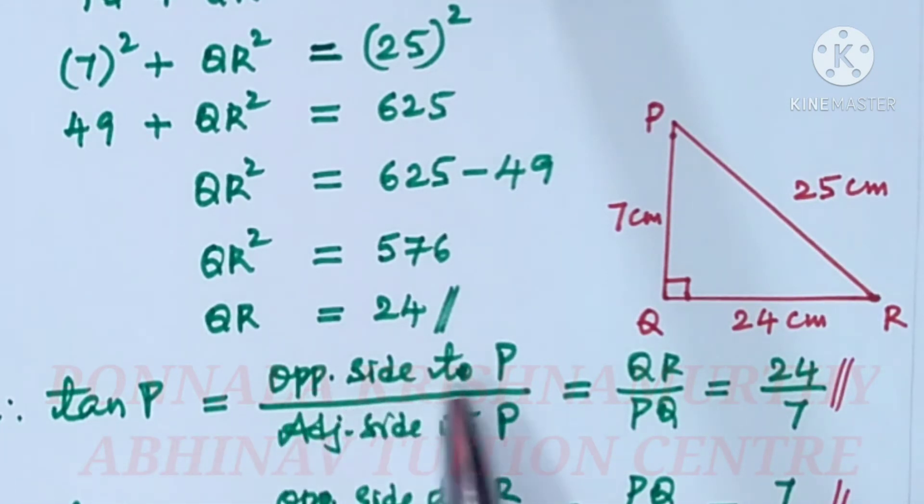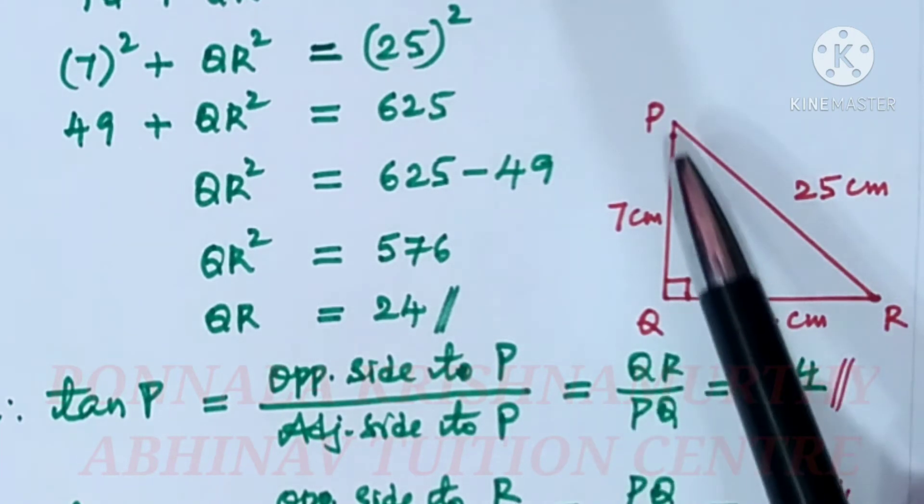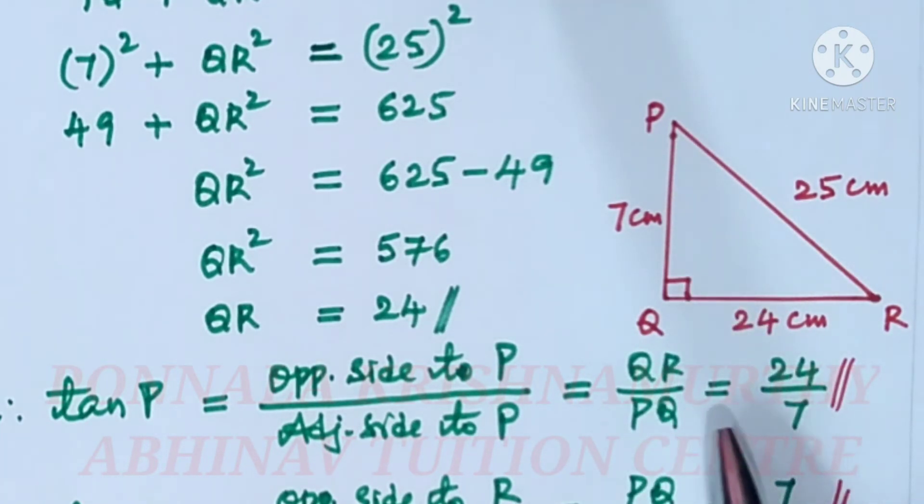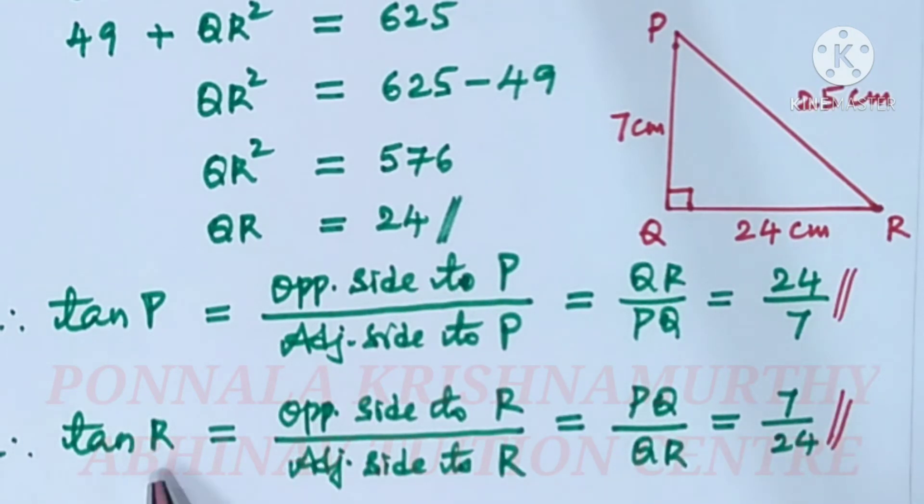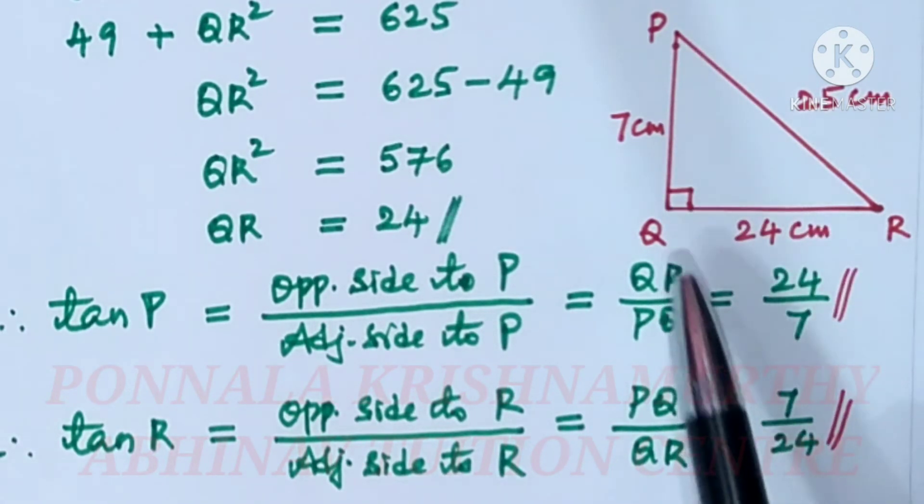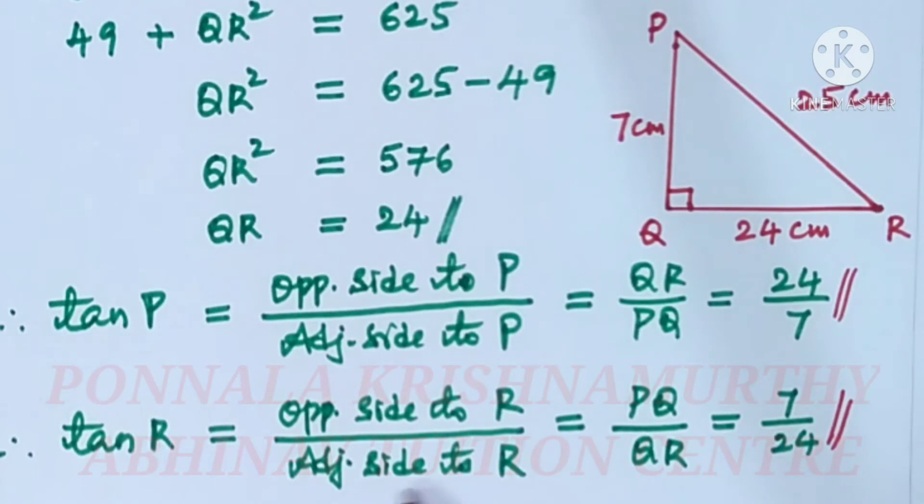Tan P is equal to opposite side to P over adjacent side to P, which is QR over PQ, equals 24 by 7. Tan R is equal to opposite side to R over adjacent side to R. Opposite side to R is PQ, which is 7, and QR is 24. Tan R is equal to 7 by 24.